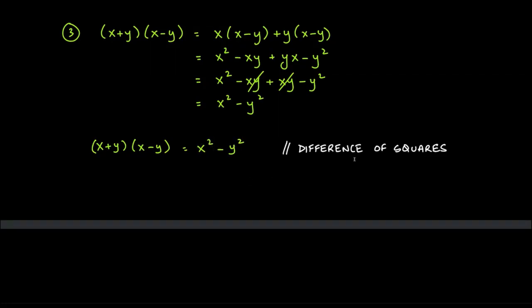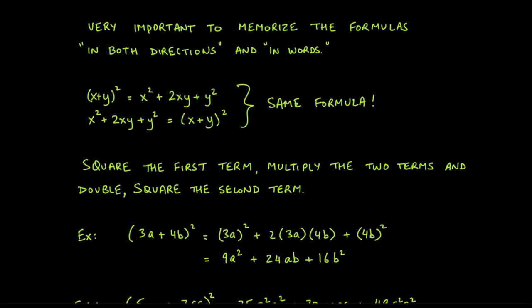It's important to memorize these formulas in both directions and in words. The formula for the difference of squares is a two-way street. The recipe is: square the first term, then square the second term, and subtract — giving x² − y².